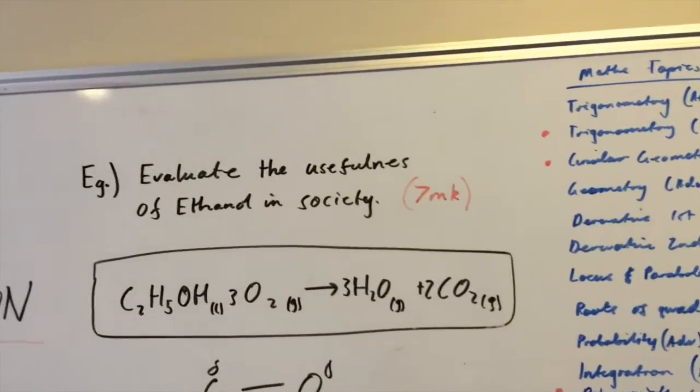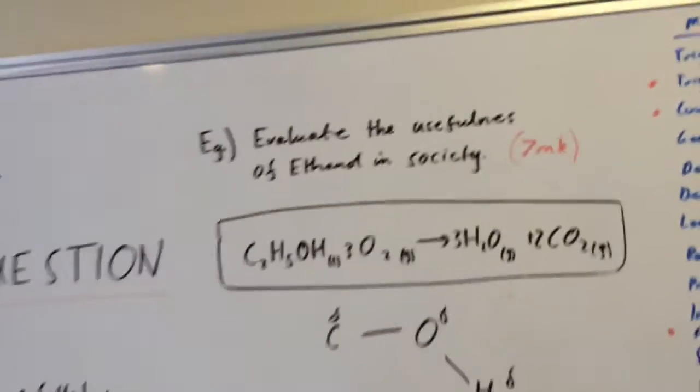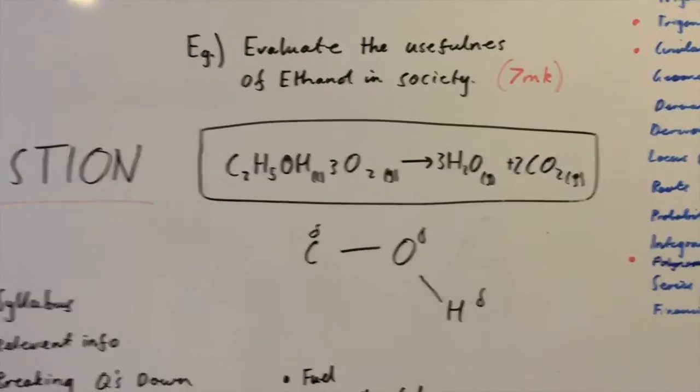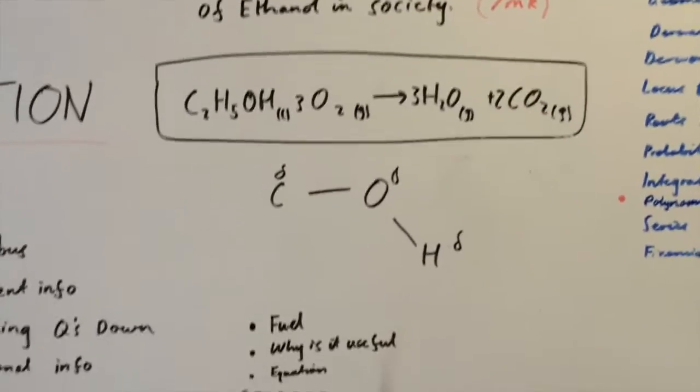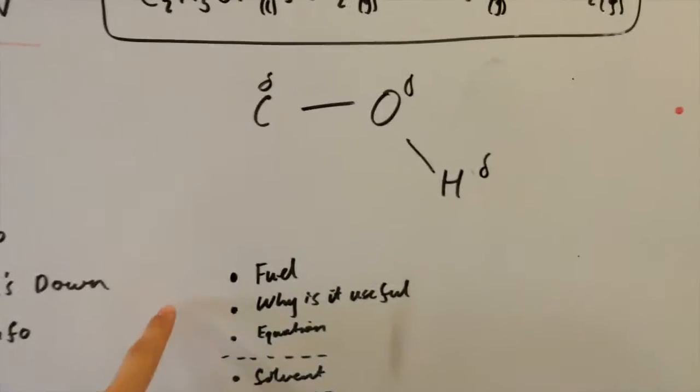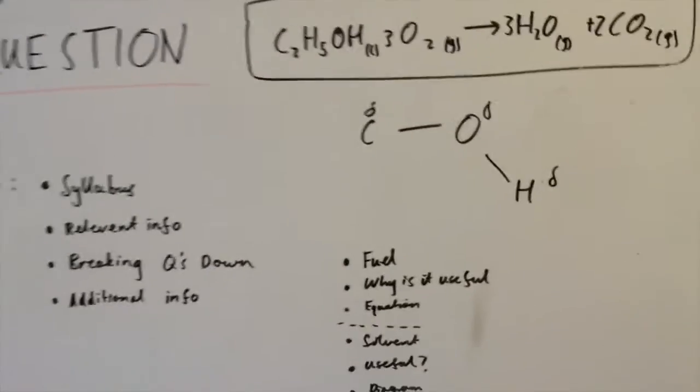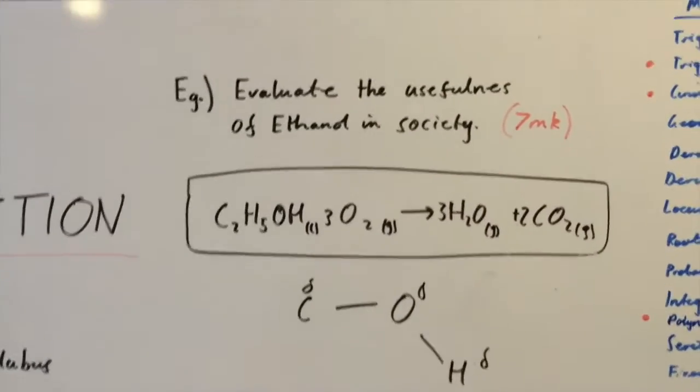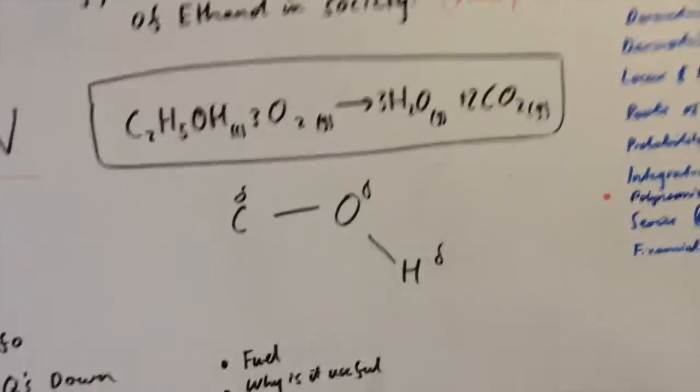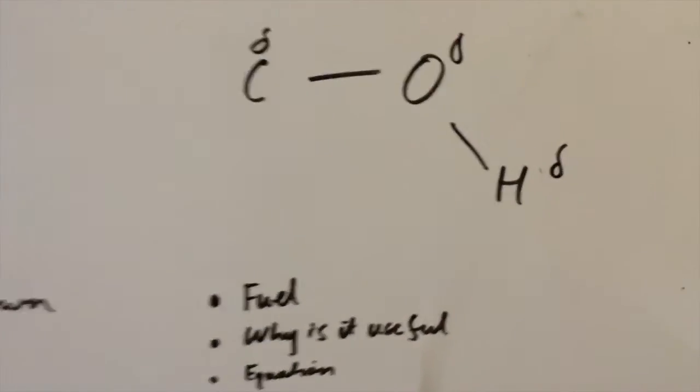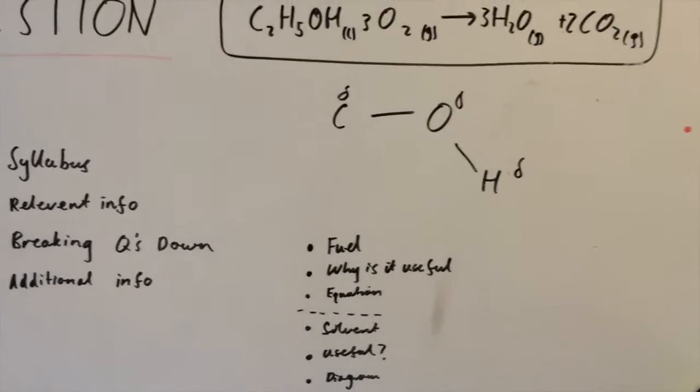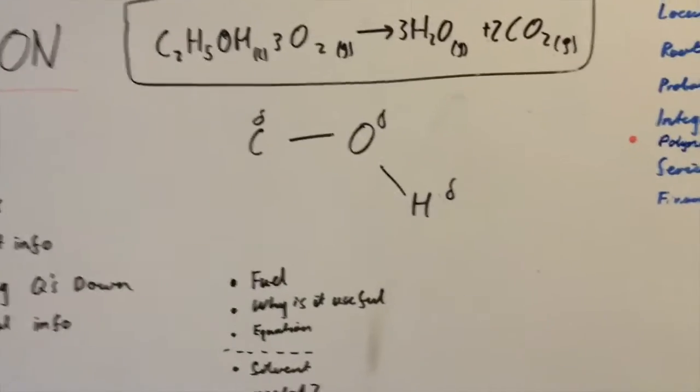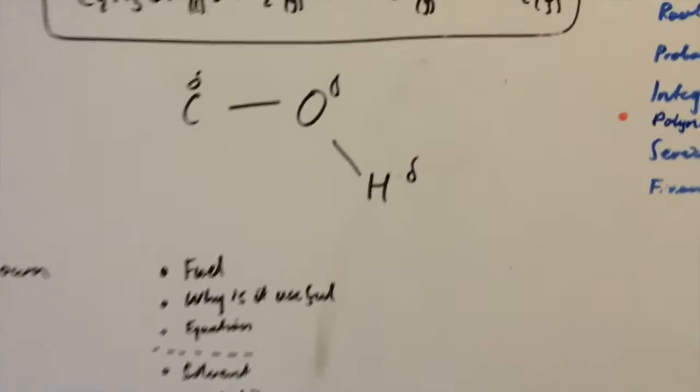So the question says evaluate the usefulness of ethanol in society and you can see there's a horrible 7 marker. Now you really need that answering technique with 7 markers because they're pretty ruthless with the marking. So basically what I want to talk about is ethanol is used as a fuel and as a solvent. So I'll cover that in a quick sentence at the front related to its use in society and basically I'll dive straight into why it's useful as a fuel, talk about it as a petrol extender, talk about it being renewable, yadda yadda yadda.